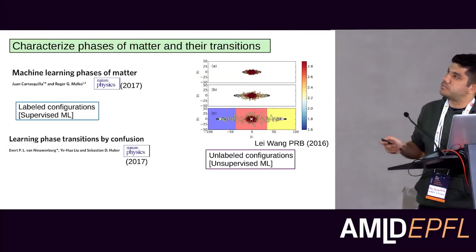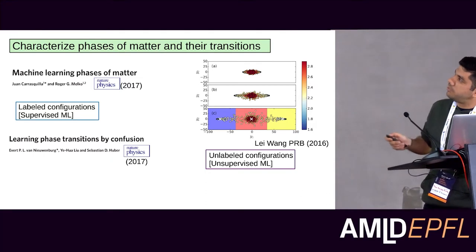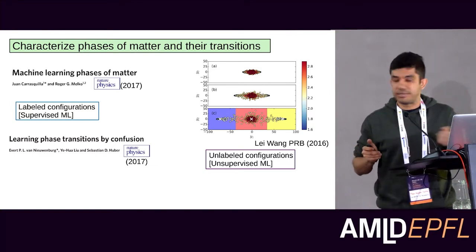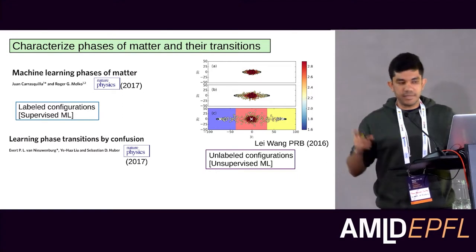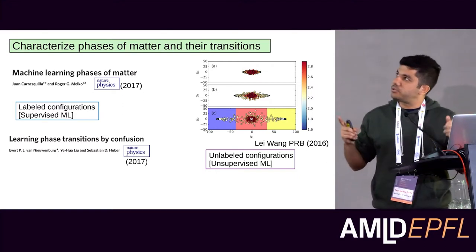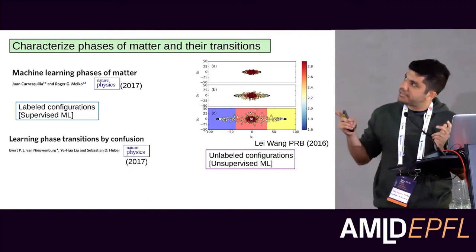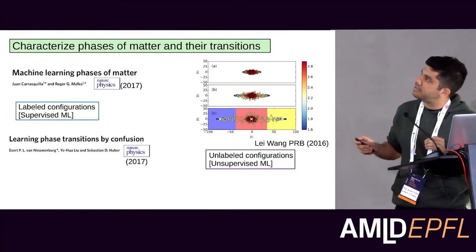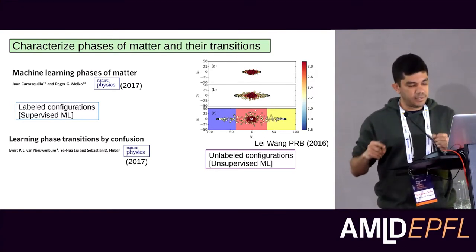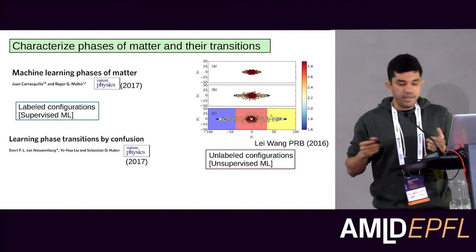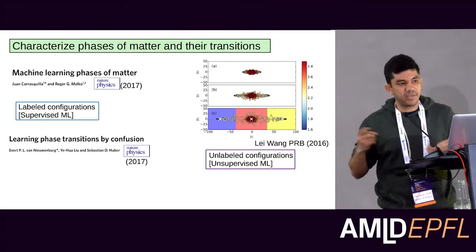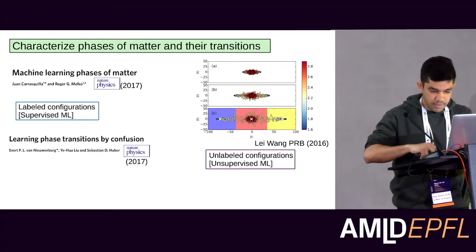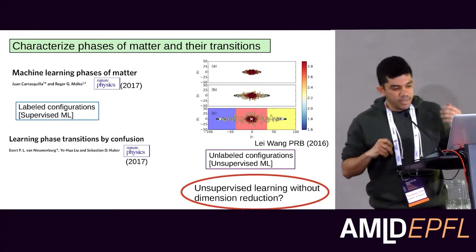There are earlier works in this direction, including a nice one by Wang that uses an unsupervised approach — principal component analysis. The basic idea is that data sets live in a high-dimensional space, and they try to project this data into two dimensions to see structure. For example, in the ordered phase of the 2D Ising model you see two clusters in the ferromagnetic phase, but not in the disordered phase.